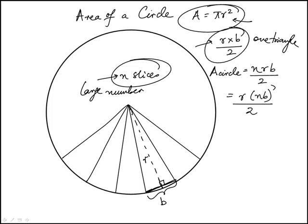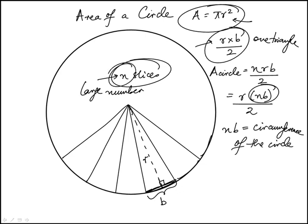Now, what is nb, if you had to visualize? This is one slice, nb would be 2b, 3b. If you go around the entire circle, nb is the same as the circumference, circumference of the circle, especially as I make these slices, the number of these slices really large, you know, 100,000, a million, 10 million.